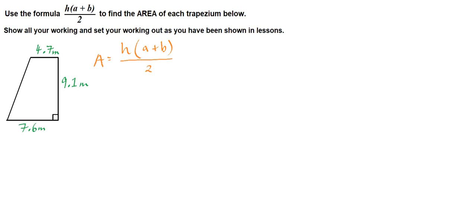So let's have a look and see if we can substitute anything into our formula. Area equals, let's try and identify A and B first. So this side and this side, they are not parallel, so for sure they are not A and B. This side and this side are parallel, so they are A and B. So let's go with 4.7 plus 7.6.